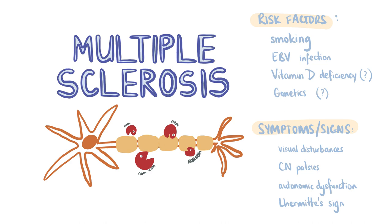Risk factors for developing MS include smoking, previous infectious mononucleosis, genetics, and vitamin D deficiency. Patients usually present with visual disturbances as optic neuritis is usually the first way that MS manifests. They may complain of an electric shock sensation that runs down their back and radiates to their limbs on flexion of the neck. This is known as Lhermitte's sign.